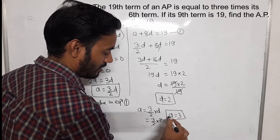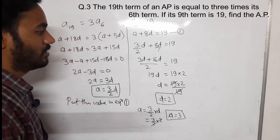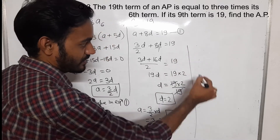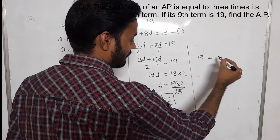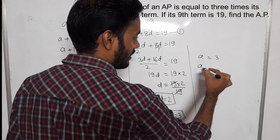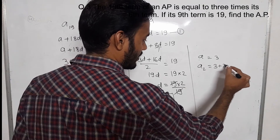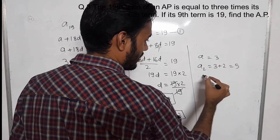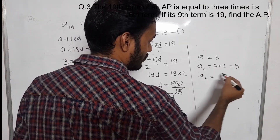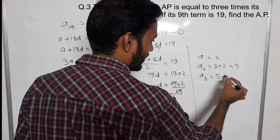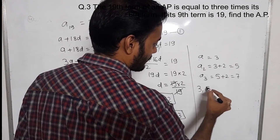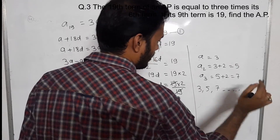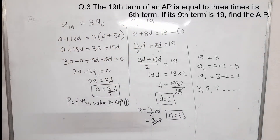A will be 3. So our AP will be: A equals 3, A2 equals 3 plus 2 that comes out to be 5, A3 equals 5 plus 2 that comes out to be 7. So our AP will be 3, 5, 7 and so on. You can take a screenshot.